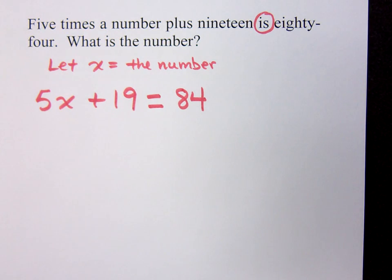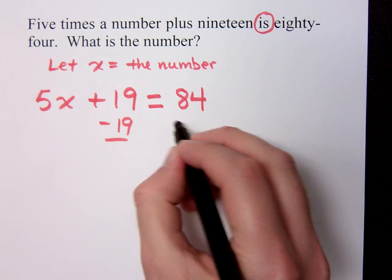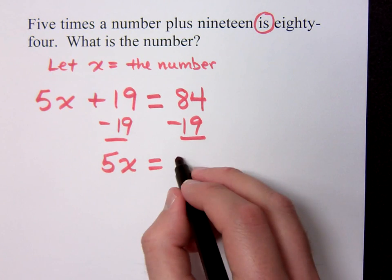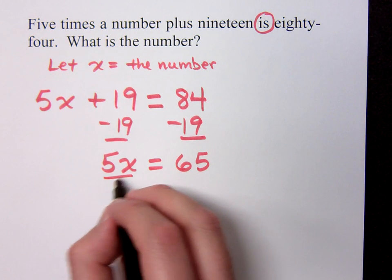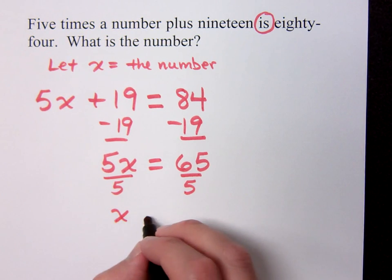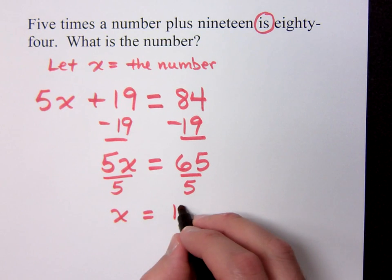What am I going to do now that I have an equation? I'm going to solve this guy for x. So what do you do? Subtract 19. Subtract 19. So 5x equals what? 65. Now, see, we've done so much of these problems by now. What do we got? X equals 13.